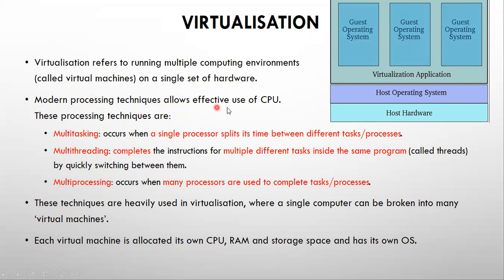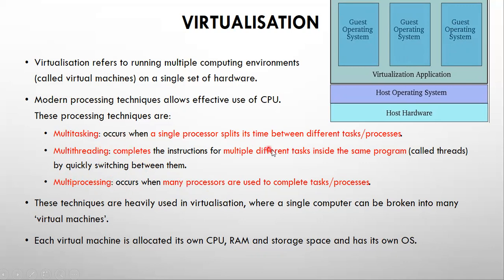Modern processing techniques allow effective use of the CPU. These techniques are multitasking, multithreading, and multiprocessing. Multitasking occurs when a single processor splits its time between different tasks. Multithreading completes the instructions of multiple different tasks inside the same program — one program is divided into threads and tasks are executed by switching between them. Multiprocessing uses many processes to complete tasks. These techniques are heavily used in virtualization, where a single computer is broken into many virtual machines.